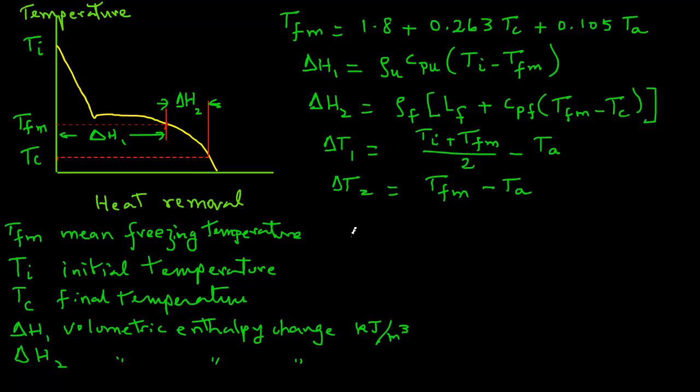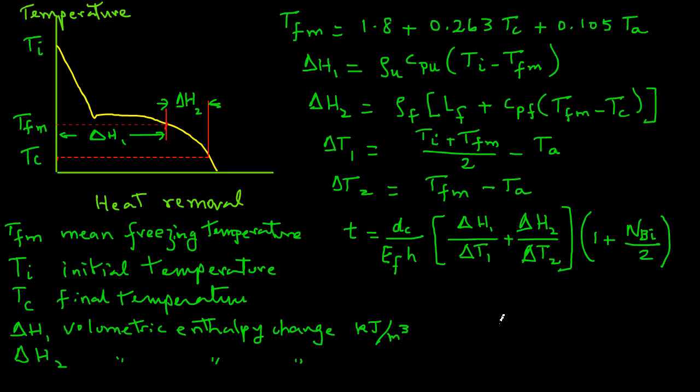The equation then is as follows: T equals DC divided by EFH in parentheses (delta H1 over delta T1 plus delta H2 over delta T2) times in parentheses (1 plus Biot number divided by 2). In this equation, DC is the characteristic dimension of the object being frozen. It is half thickness for a slab, radius for a cylinder, and radius for a sphere. The heat transfer coefficient is expressed as H, which is watts per square meter degree Celsius.